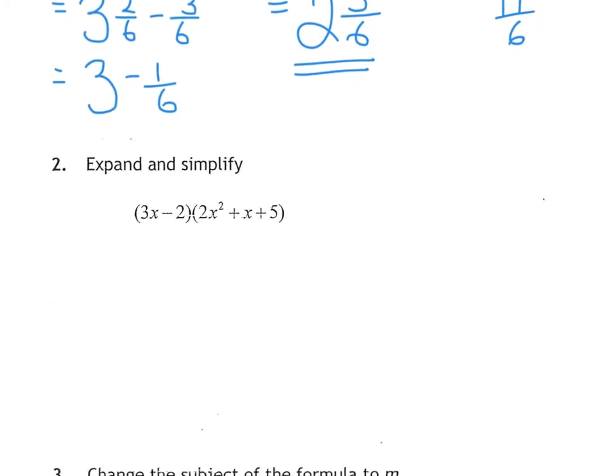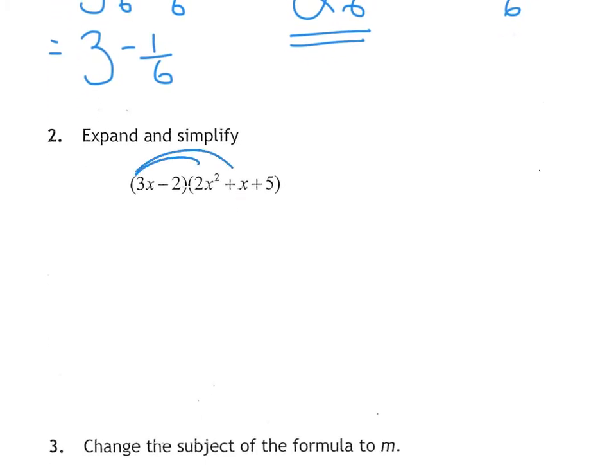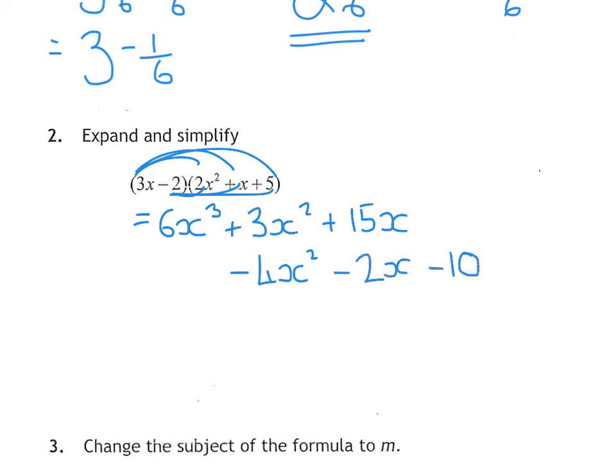Question 2 is expand the bracket. So first we times everything by 3x. 6x cubed plus 3x squared plus 15x. Then we multiply everything by the minus 2. I line this up underneath the x squared, so that gives me minus 4x squared, minus 2x, and minus 10. Then we tidy up the bits, tidy up the x squareds. 3 take away 4 is minus 1, so minus 1x squared. 15 take away 2 is 13, so plus 13x take away 10.